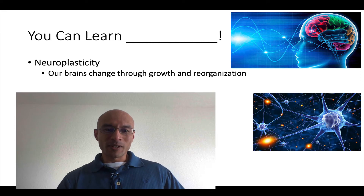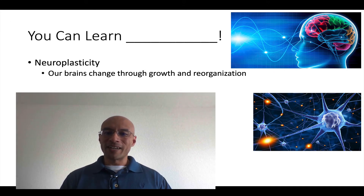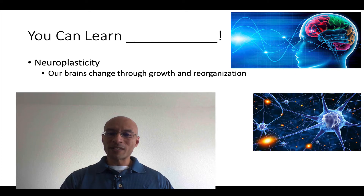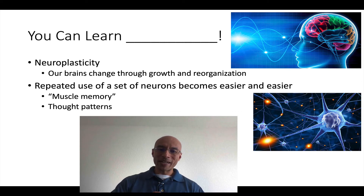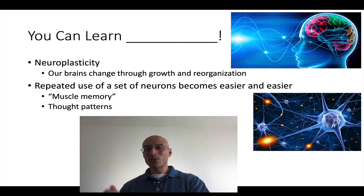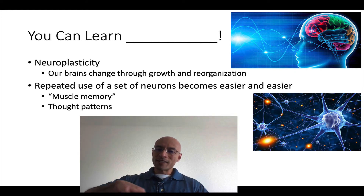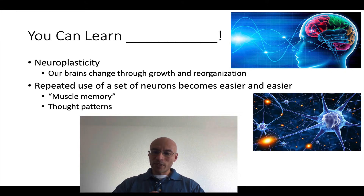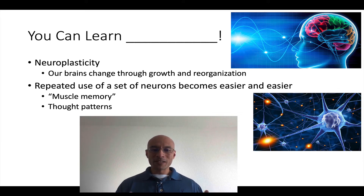There's a great concept called neuroplasticity, and it's the idea that our brains can change through growth and reorganization. This happens to us all the time. You can probably think of some skills that you developed through neuroplasticity. When we practice a skill — maybe it's a physical skill like swinging a baseball bat or throwing a football — we do this over and over. We fire our neurons in a certain sequence, and as we repeat this sequence, that triggering of these neurons becomes more natural, quicker and more efficient. That's where muscle memory comes from.